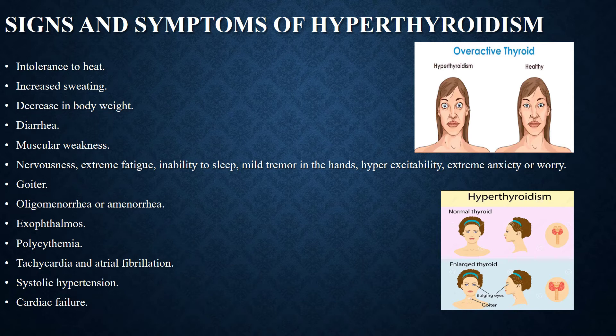Enlargement of the thyroid gland is also called toxic goiter. Oligomenorrhea (infrequent menstrual periods) or amenorrhea (absence of menstruation) may occur. Exophthalmos, that is protrusion of eyeballs, may be present. Polycythemia refers to an increase in the number of red blood cells in the body. Tachycardia and atrial fibrillation, systolic hypertension, and cardiac failure are also signs of hyperthyroidism.